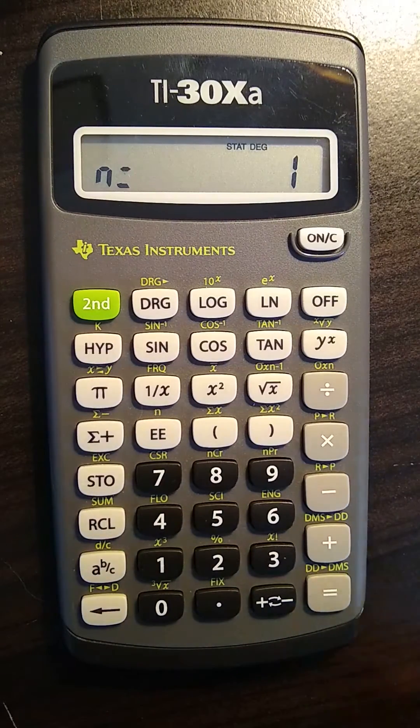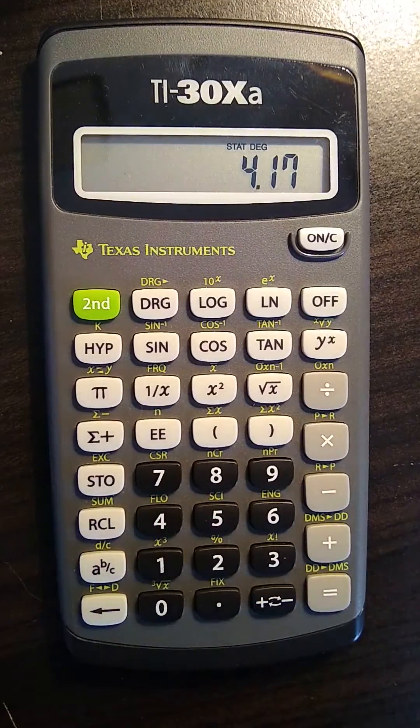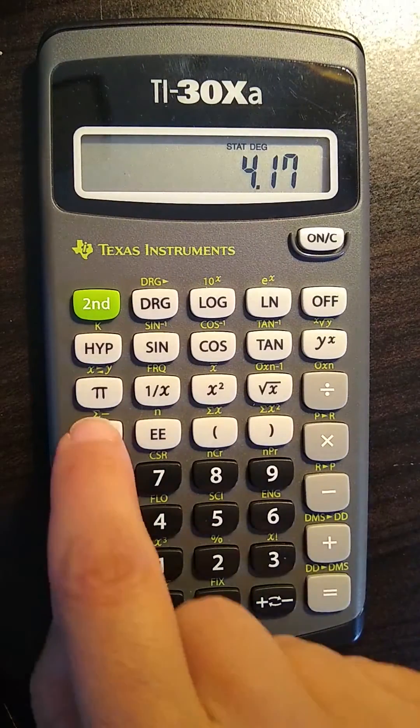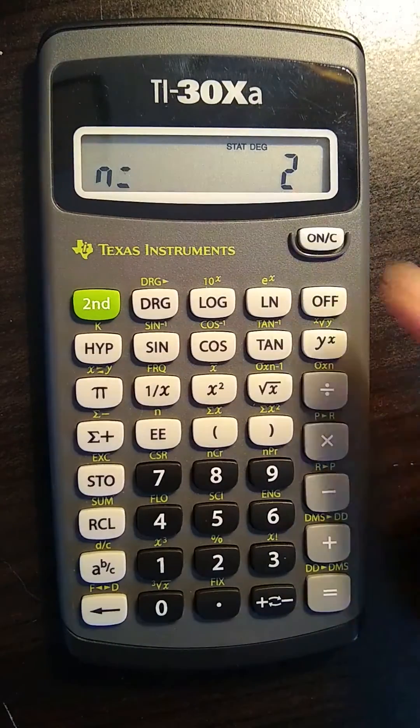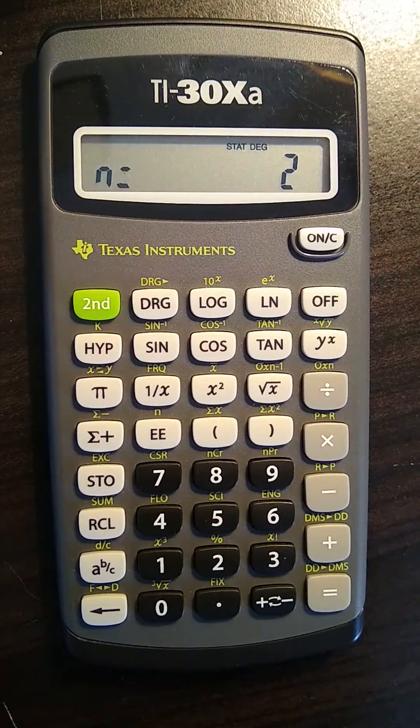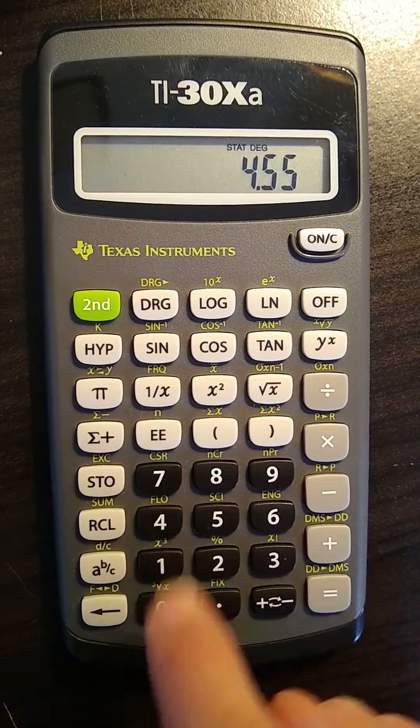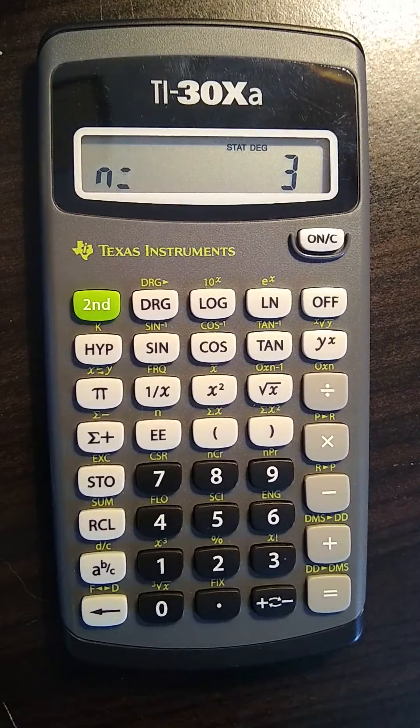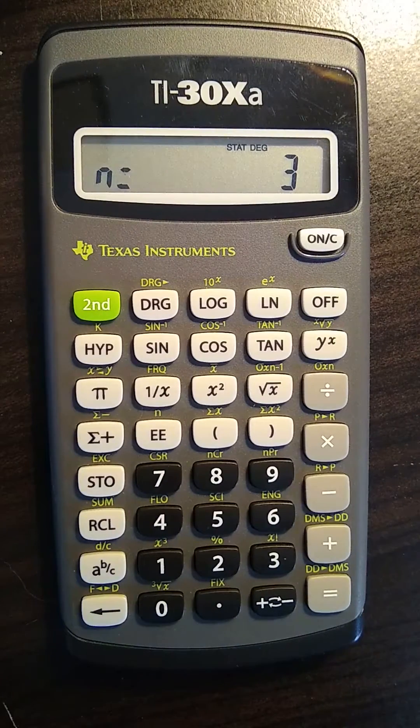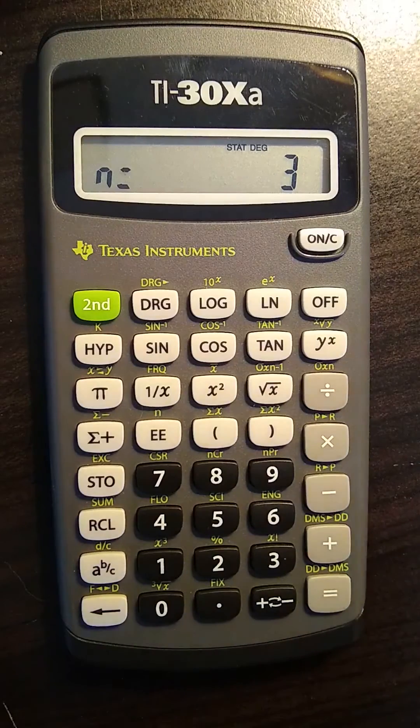If we want to add a second value, say 4.17, enter that into the calculator and then do sigma plus again. Now we have two values in our data set and let's go ahead and add a third value to our data set. So now it's telling us n equals 3.